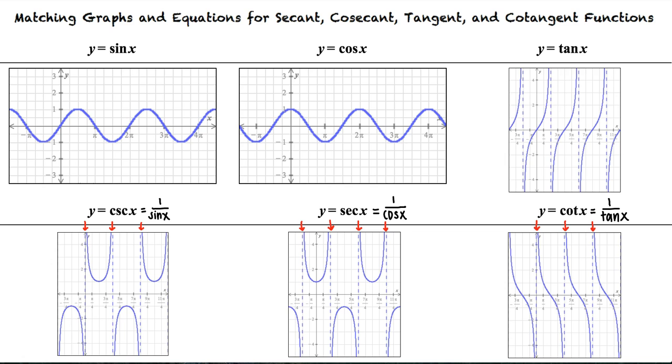We notice the distinct shape of the tangent graph looks very similar to that of the cotangent graph, and the secant and cosecant graphs look like they consist of parabolas that open up in alternating directions.